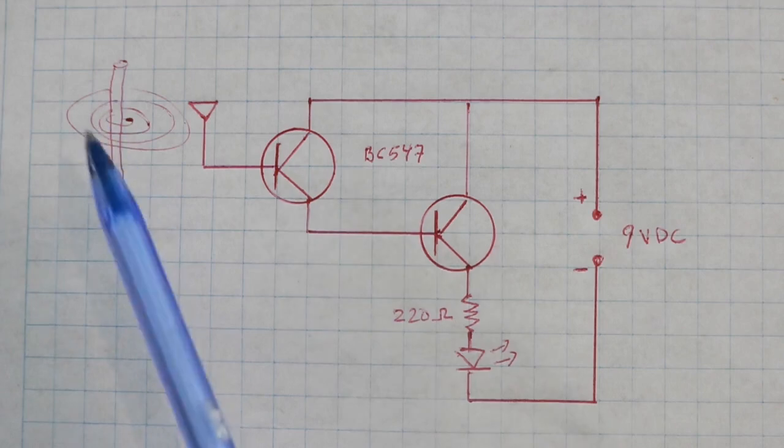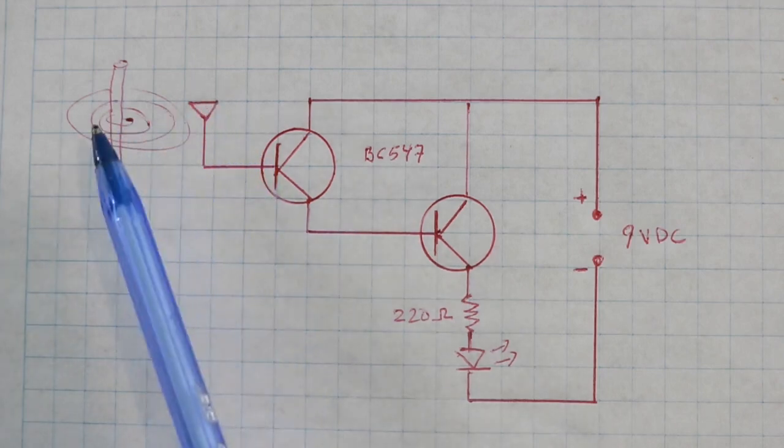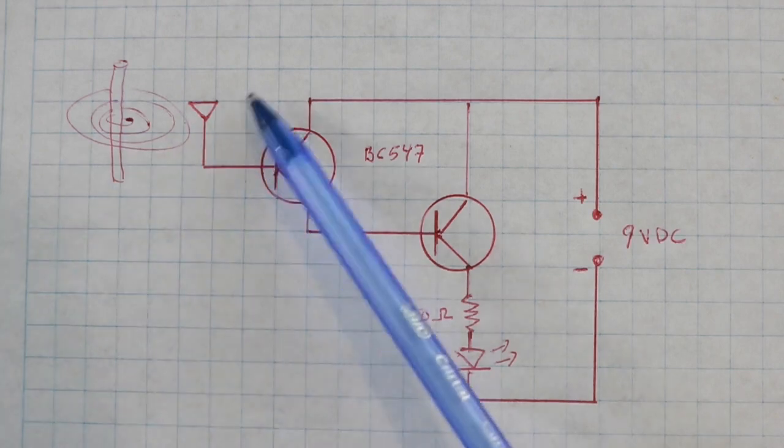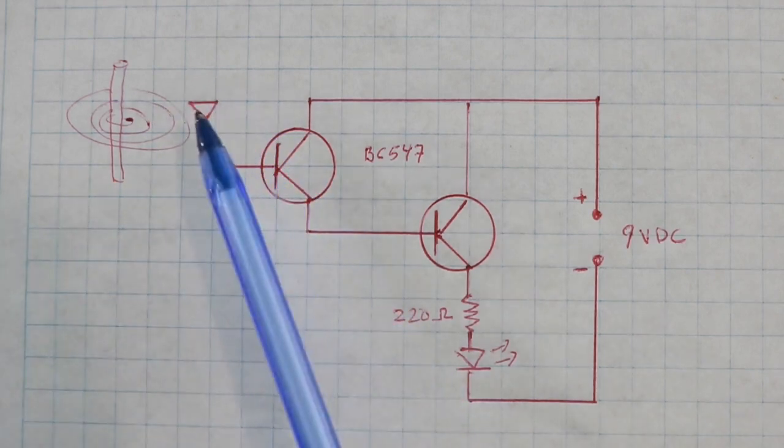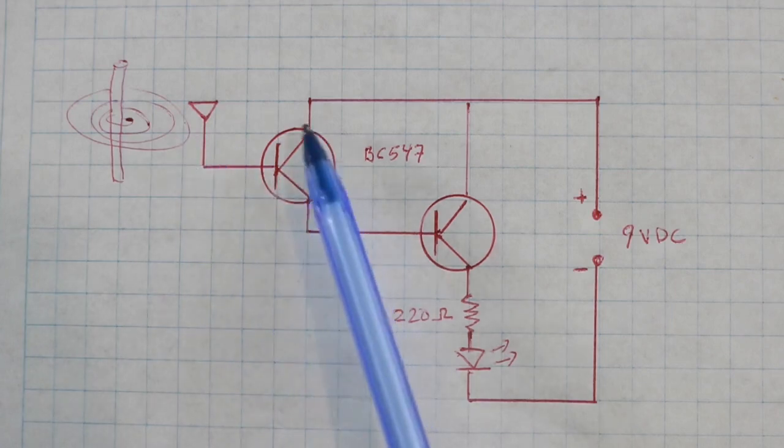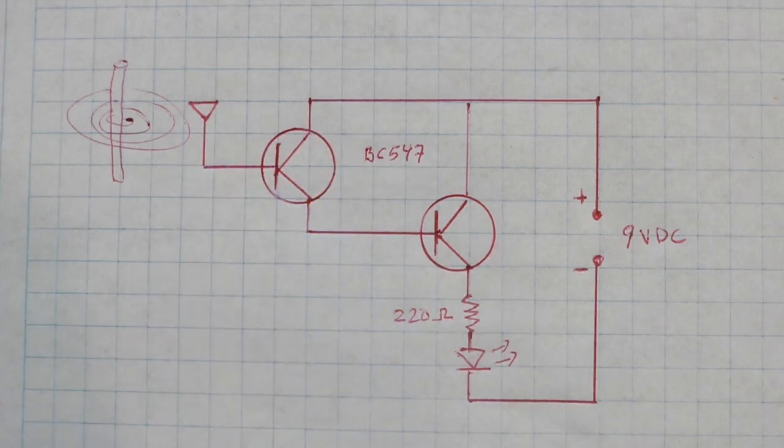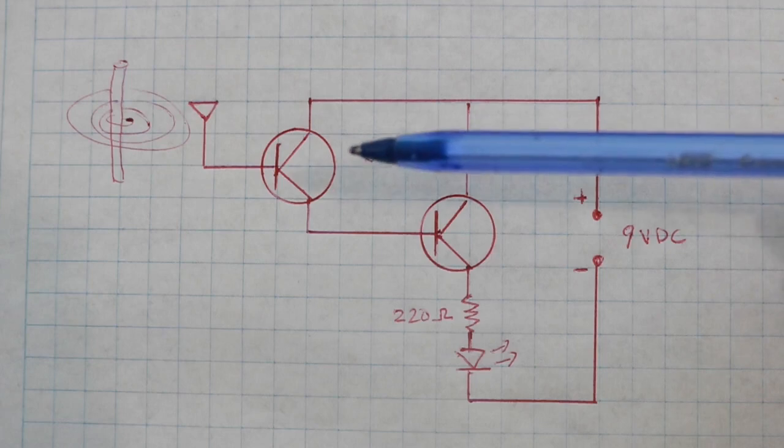A varying magnetic field that increases and collapses with time and this induces a very tiny current in the antenna. This current is fed to the base of the first transistor and the transistor amplifies that current.